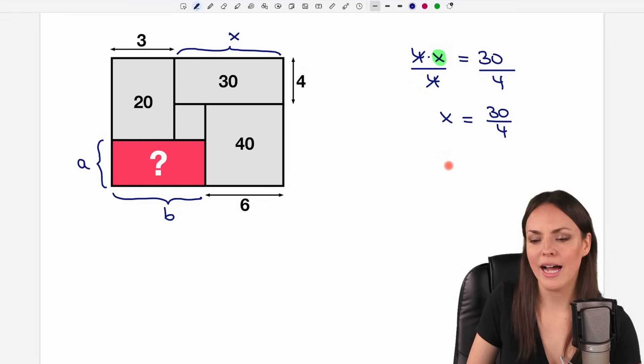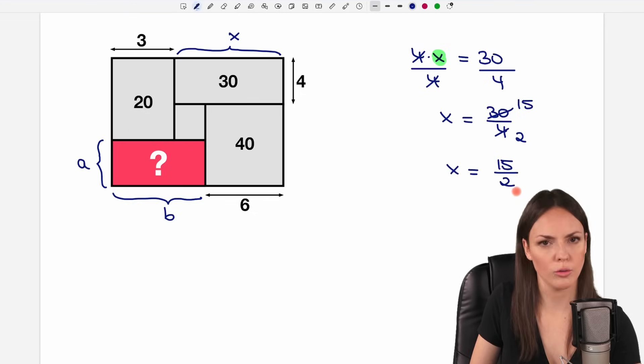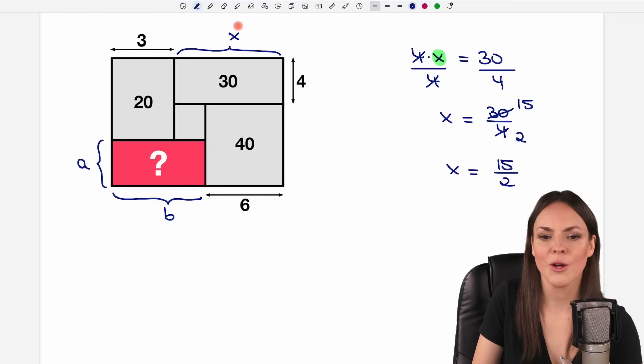But first of all, I would like to reduce this fraction a little bit because both numbers are divisible by two. So 30 over two equals 15 and four over two equals two so that we have 15 over two in total with smaller numbers for the length of x here. So this is 15 over two.